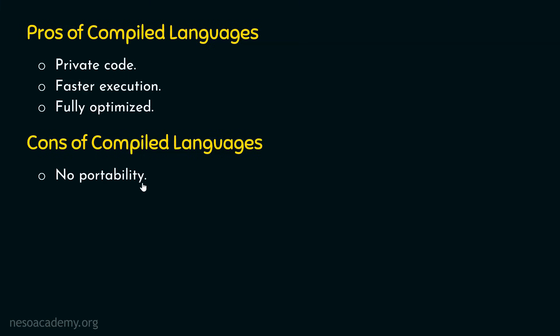Portability means that the code is capable of running on multiple machines, but here there is no portability. The second disadvantage is an extra compilation step. Whenever we make changes to our code, we need to compile it and then run it. There is always a compilation step when changes are made. These are all the cons of compiled languages.